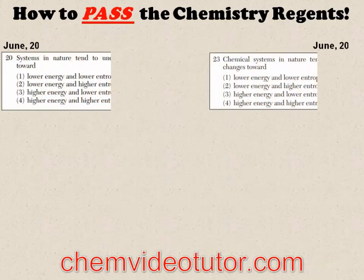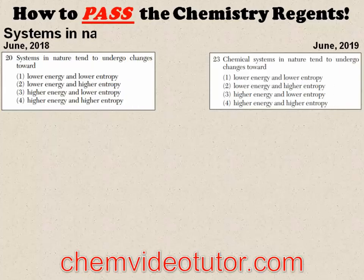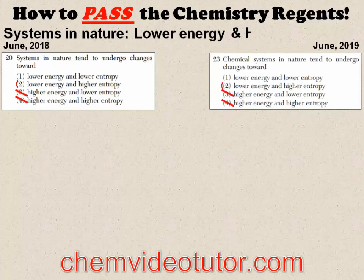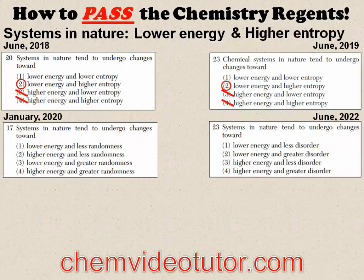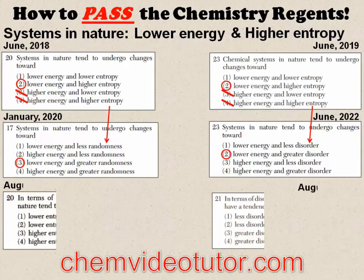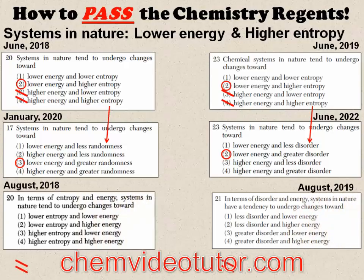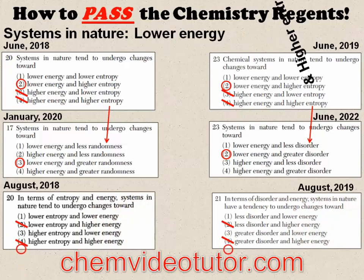When you see a question mention the word 'systems in nature,' you should know that they tend to undergo changes toward lower energy and higher entropy. Sometimes the word entropy might be disguised by the word randomness or disorder, but the answer will still be lower energy and greater entropy. And even if they switch the order of the words around on you, just remember: lower energy and higher entropy.